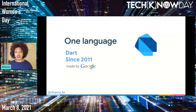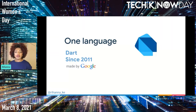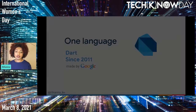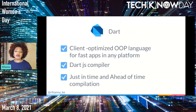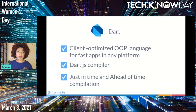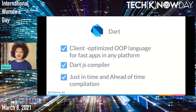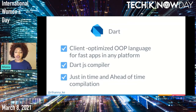Flutter is written in Dart, and in order to develop a Flutter app, we need to learn one language: Dart. Dart is a language that has existed since 2011, created by Google to develop web applications. It is now a client-optimized, general-purpose, object-oriented programming language for creating fast apps on any platform. If you are familiar with object-oriented languages like Java or C#, you'll find many similarities and find Dart straightforward to learn. If you are familiar with JavaScript or TypeScript, some concepts will seem similar. And if you are new to programming, Dart is still easy to learn compared to other languages.